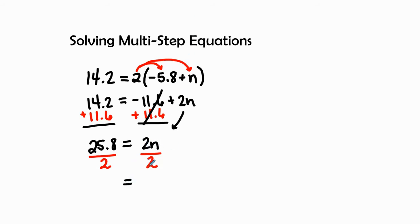So 2 divided by 2 is 1, so we'll have 1n. And then 25.8, we could do this off to the side—25.8 divided by 2. 2 goes into 2 one time, 2 goes into 5 two times, so that's going to give me 24.